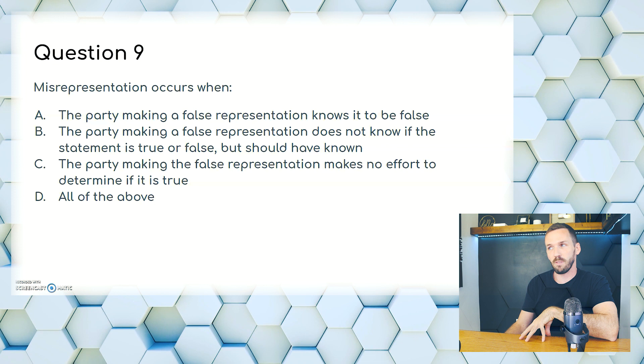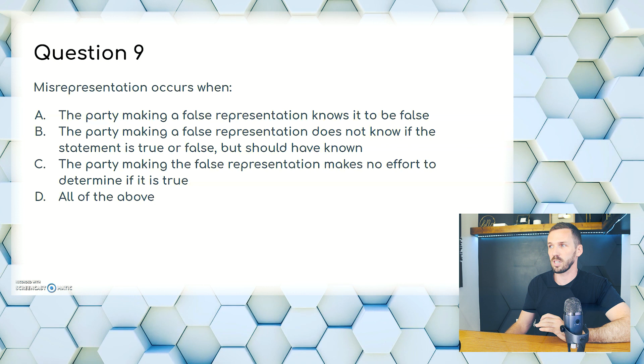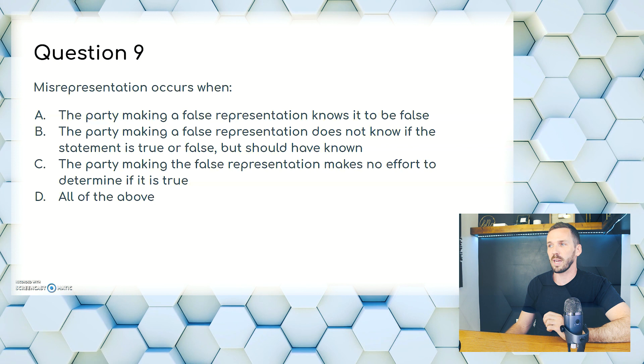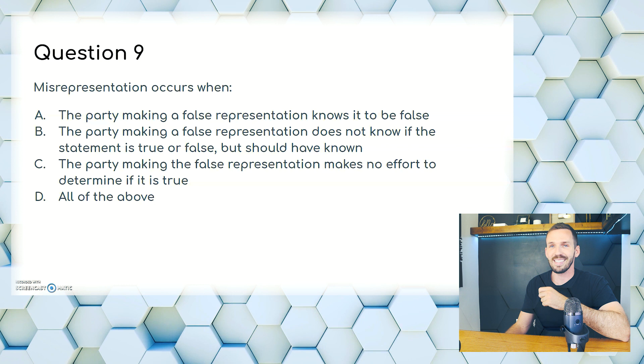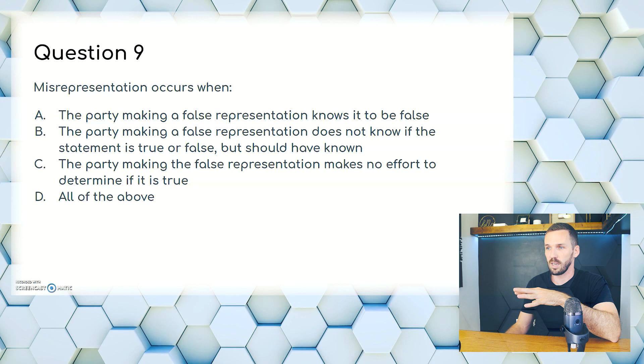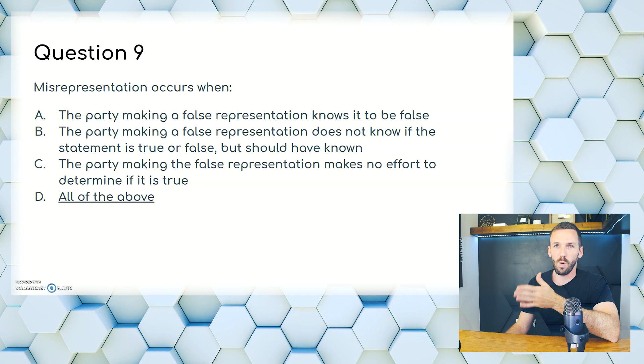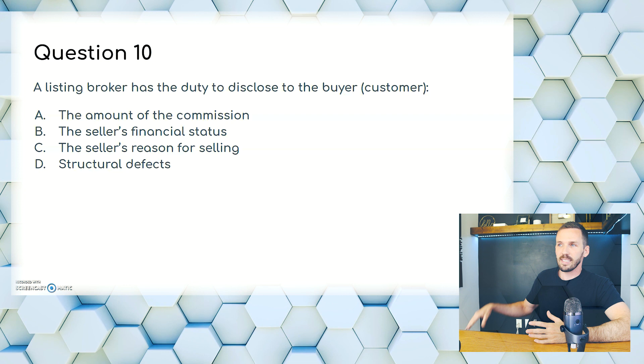Question 9. Misrepresentation occurs when: A, the party makes a false representation and knows it to be false; B, the party makes a false representation and does not know if it's true or false but should have known; C, the party makes no effort to determine if it's even true; or D, all of the above. A is willful misrepresentation, B is negligent misrepresentation, C is another form of misrepresentation. The answer is D, all of the above.